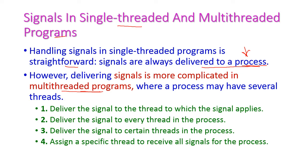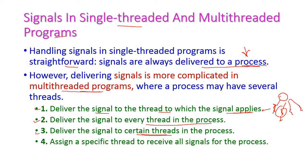In multi-threaded programming, this is very complicated because we have to deliver the signal to the thread to which the signal applies. Since a single process has many threads, we must identify the particular thread and deliver the signal to it. Options include: delivering to every thread in the process, delivering to only certain threads, or assigning a specific thread to receive all signals for the process. Handling signals in multi-threaded programming is very difficult.